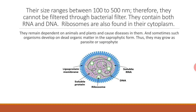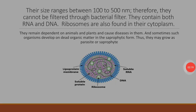Let me give the gist of today's lesson. Mycoplasma is the smallest living organism. They lack a cell wall. Because of the absence of a cell wall, antibiotics like vancomycin and penicillin do not work on them. And they live as either parasites or saprophytes. Thank you very much.